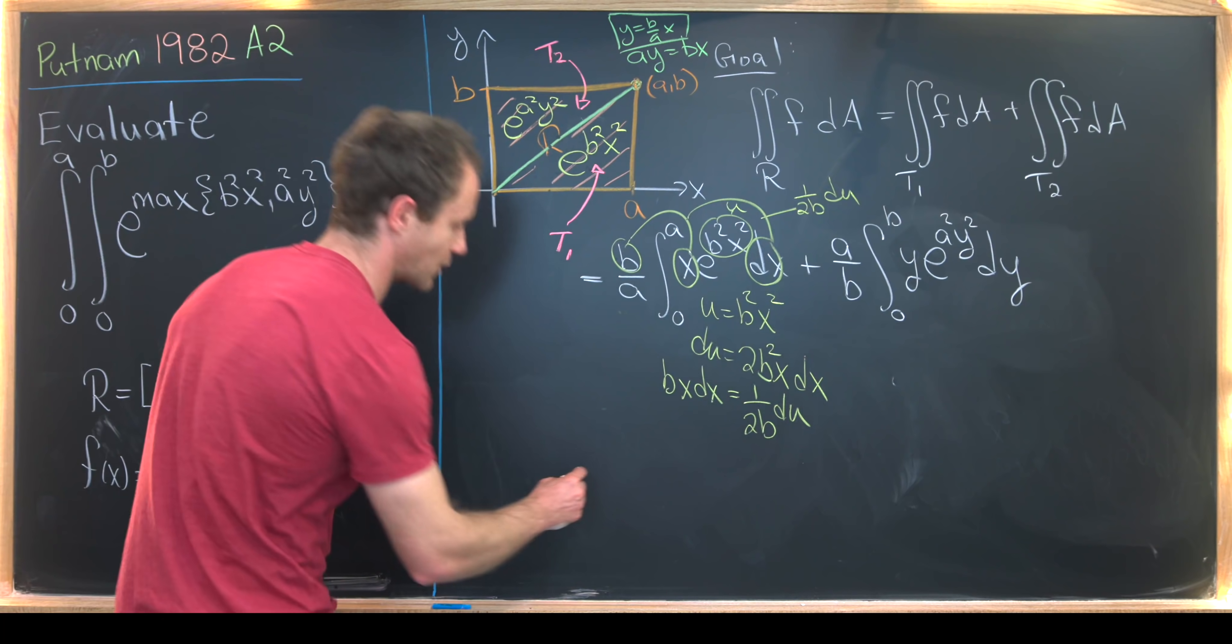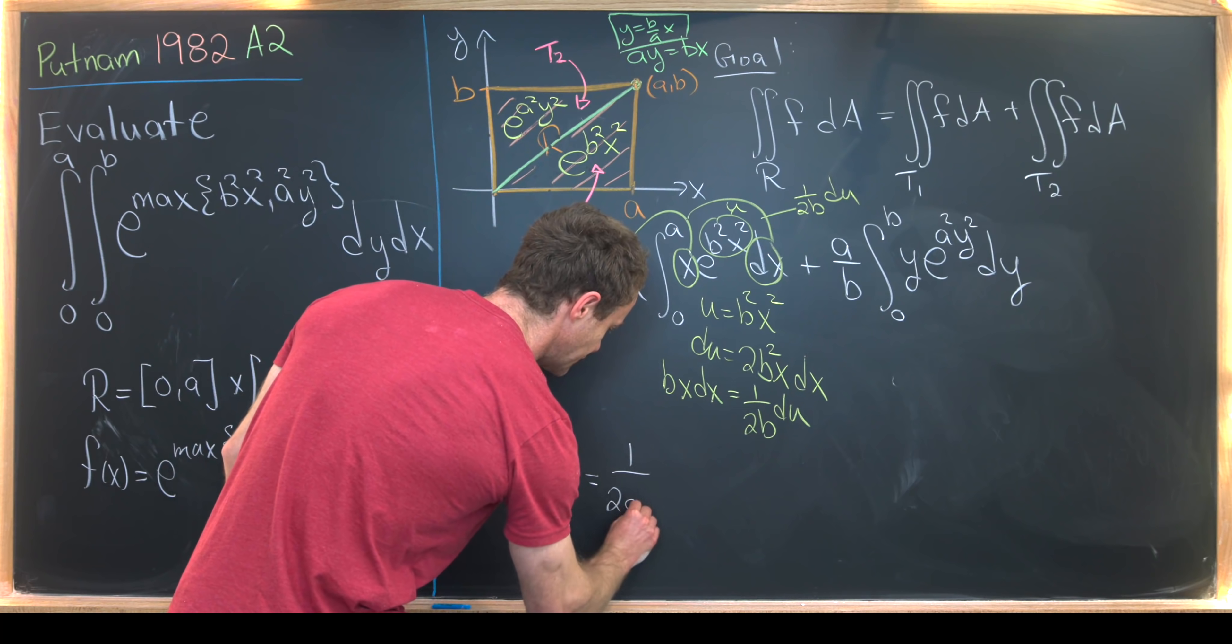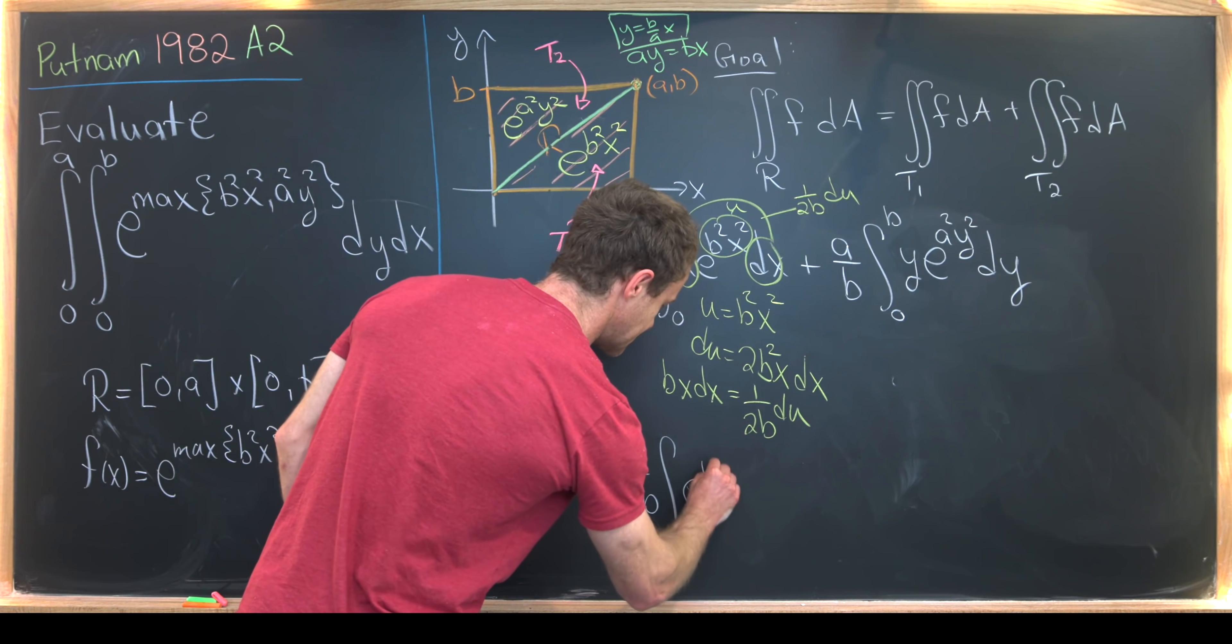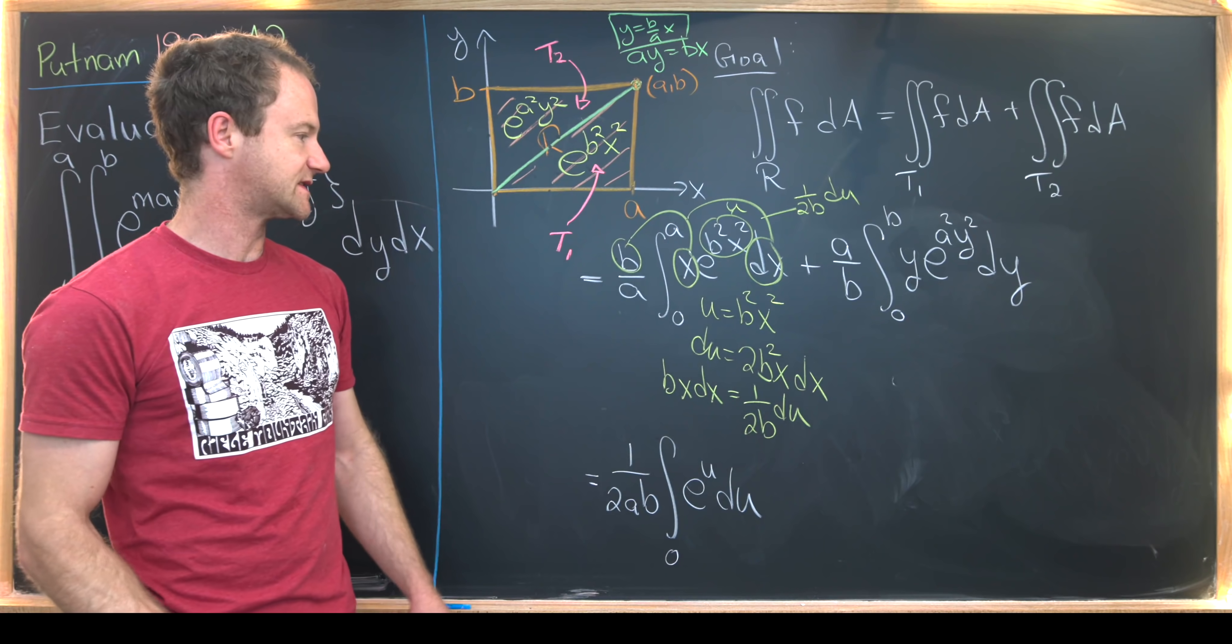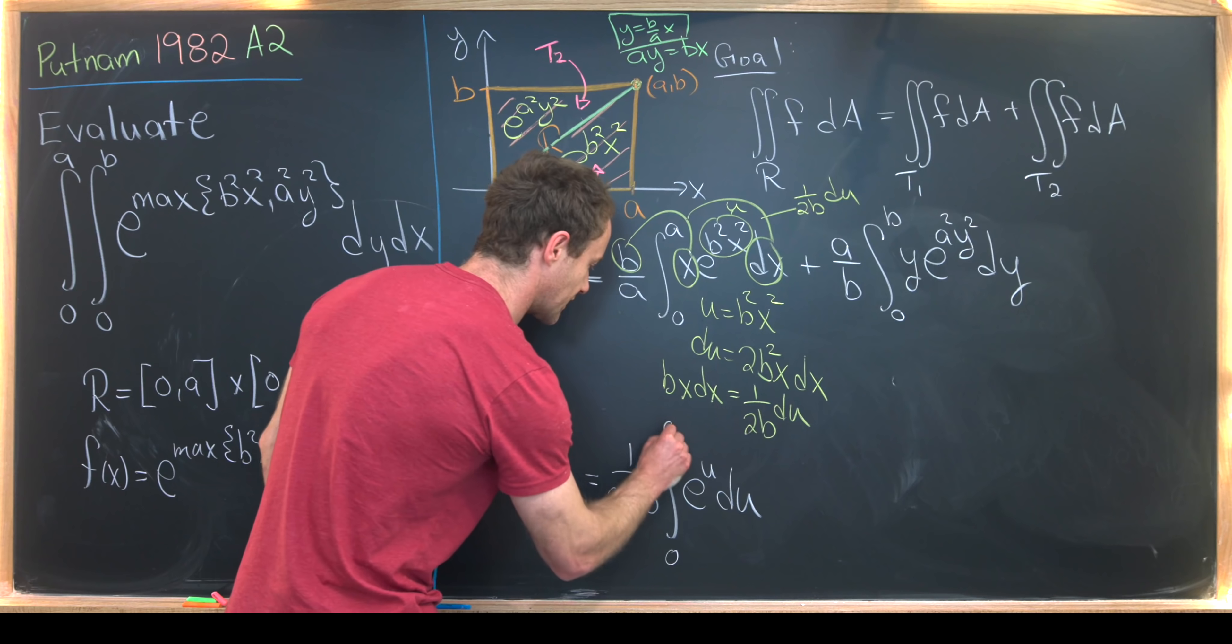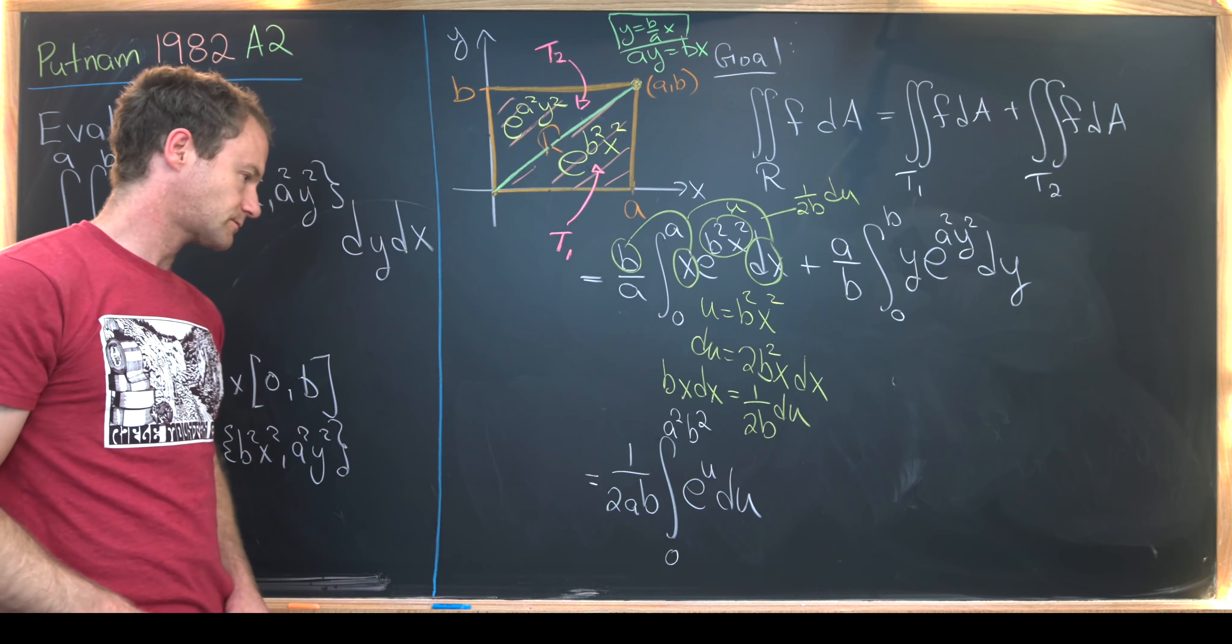So let's see how we've transformed this integral now. This is going to be one over two a b. We have the integral from zero to something. We'll talk about that in just a second of e to the u du. Now what's that something? Well, let's see. When x is equal to a, u is equal to a squared times b squared. So we get a squared times b squared.